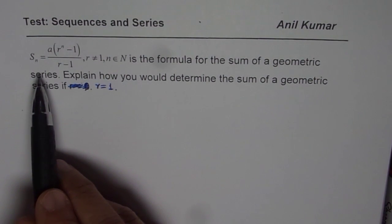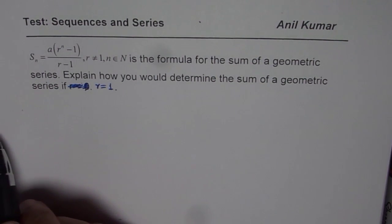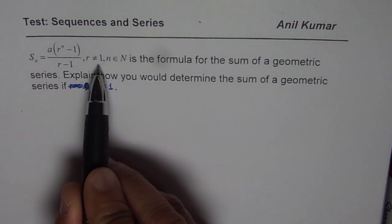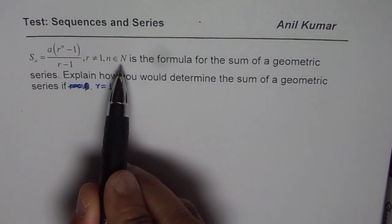S_n equals a times r to the power of (n minus 1) divided by (r minus 1), where r is not equal to 1 and n belongs to natural numbers. This is a formula for the sum of a geometric series as you know.